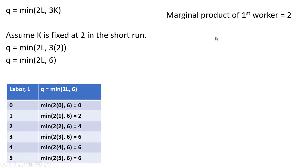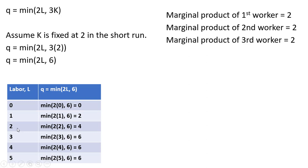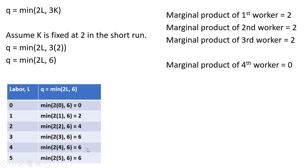The marginal product of the first worker is 2 — hiring the first worker, output goes up by 2 units. The marginal product of the second worker is also 2; going from 1 to 2 workers, output goes from 2 to 4, a 2-unit increase. The marginal product of the third worker is 2 as well — output goes from 4 to 6. The marginal product of the fourth worker is 0; output doesn't go up or down by hiring the fourth worker.